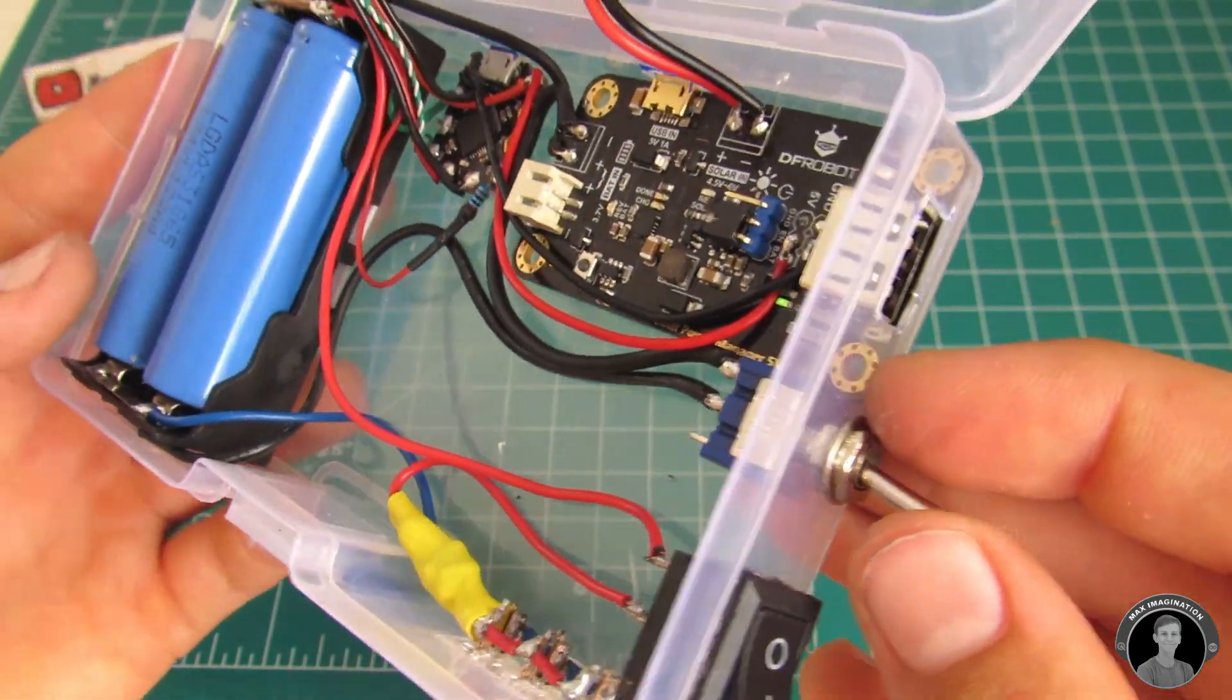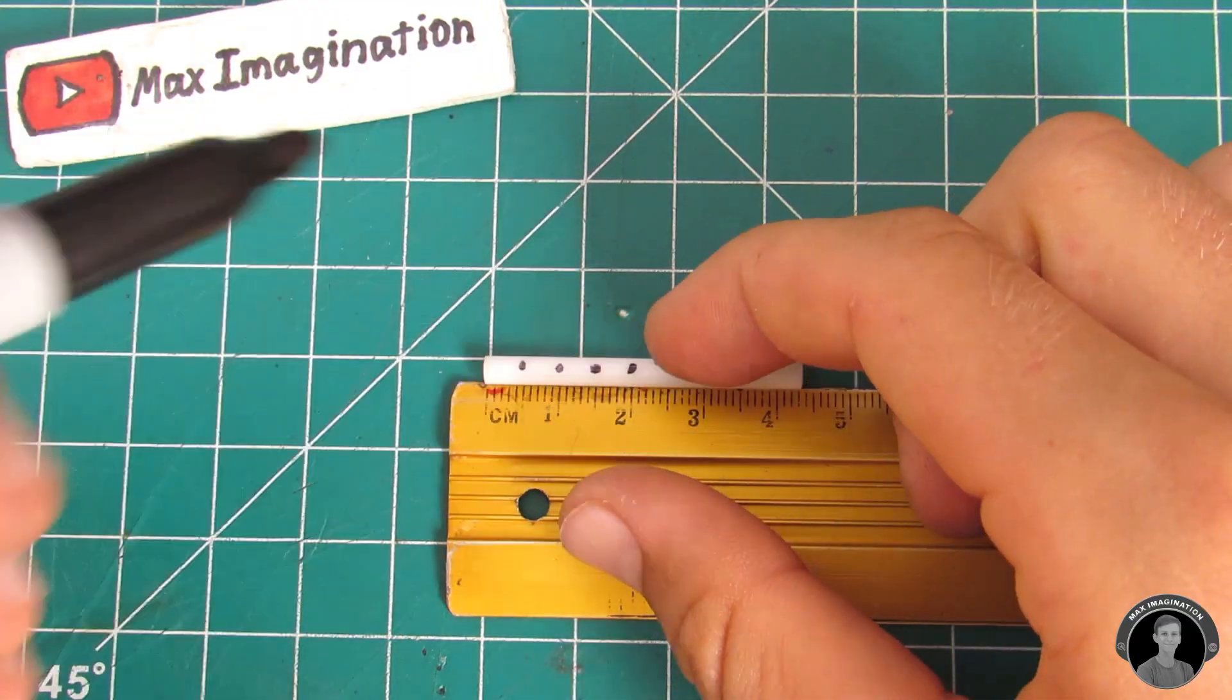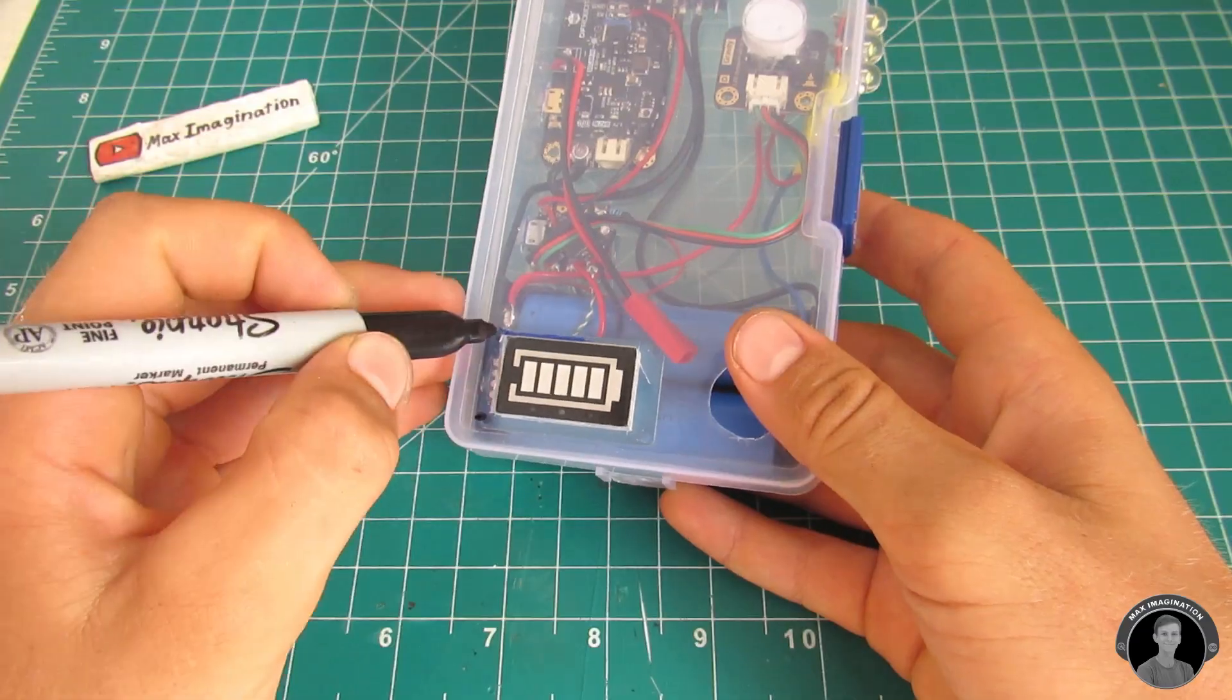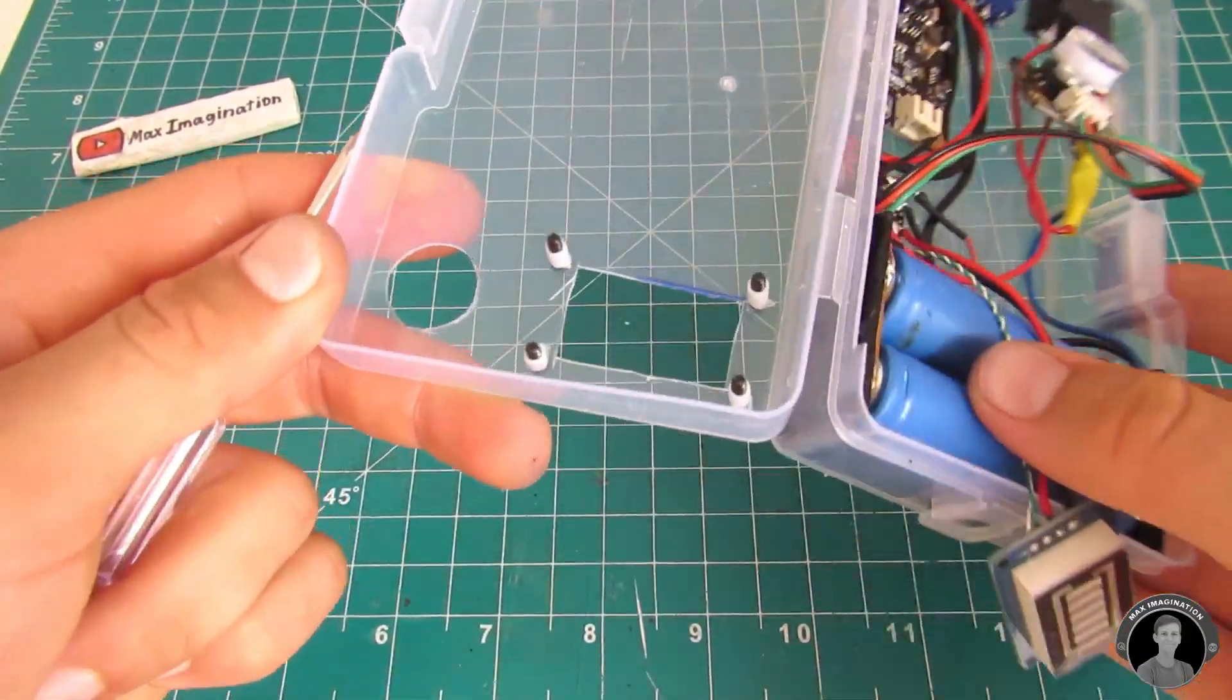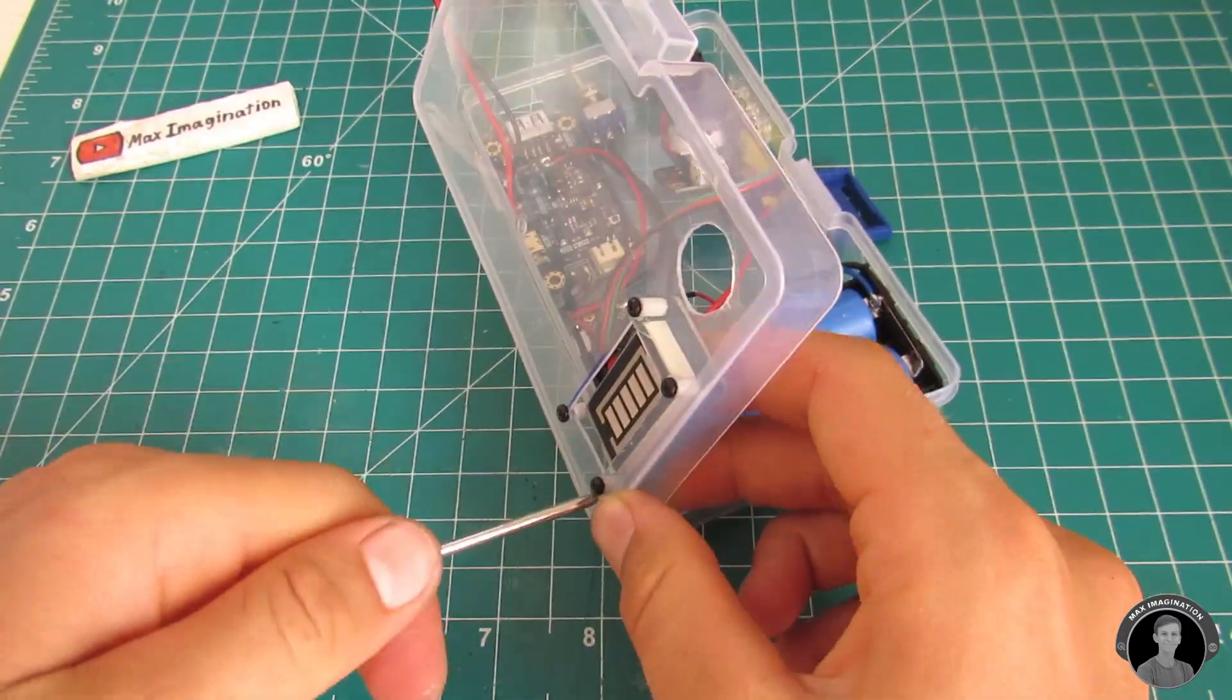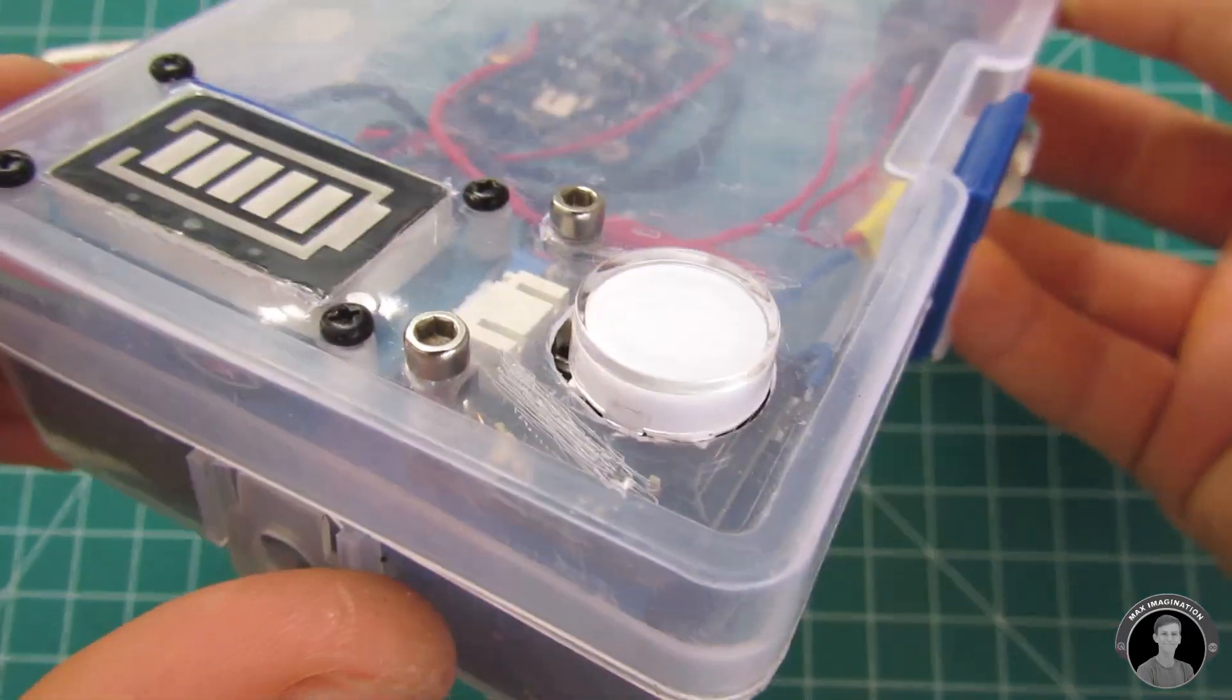Using plastic lollipop stick tubes you can cut them up into 5mm pieces. Use them as bolting spacers to secure the battery indicator module to the front of the power bank.